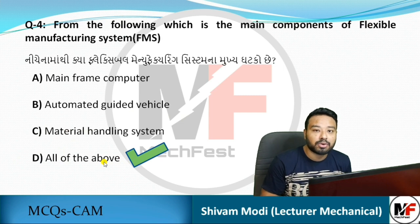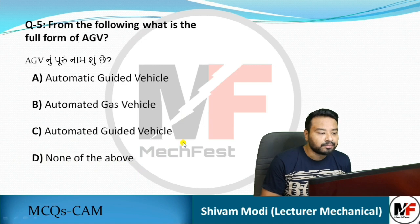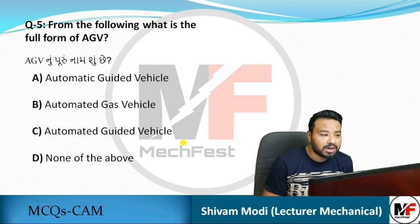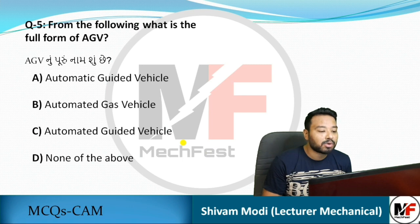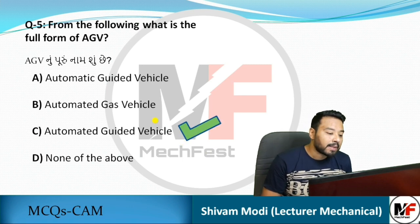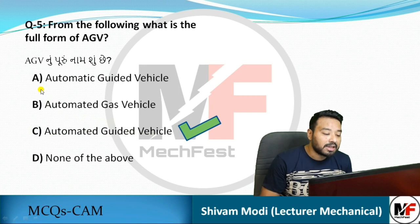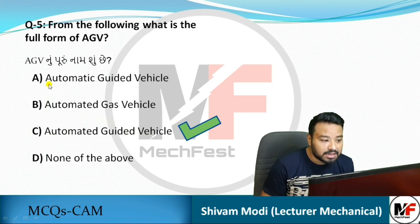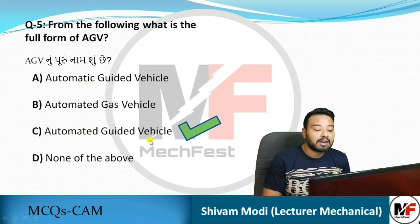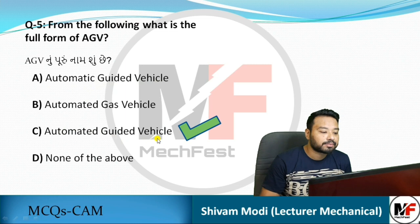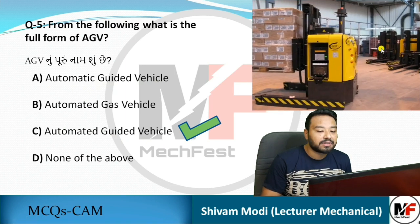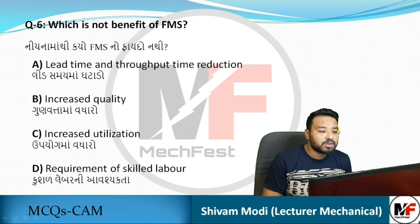Next question: what is the full form of AGV? The answer is option C — Automated Guided Vehicle. Note: a common wrong option is 'Automatic Guided Vehicle,' but the correct full form is Automated Guided Vehicle. Here is a figure of an AGV.